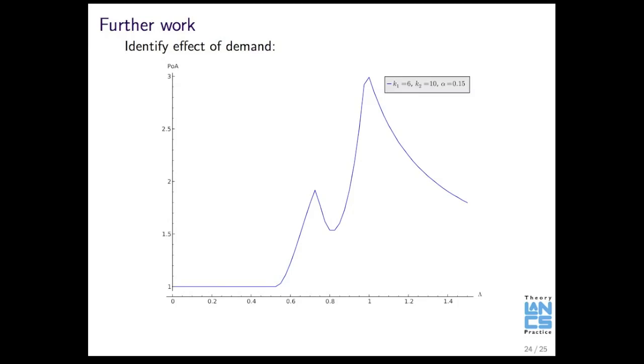Ongoing, I had a few of these running around today, it takes a while to get some of these graphs obviously. Seeing the effect of demand, so as demand increases, how does the price of anarchy increase? So at the moment I've just got that single unit of demand going through, but now if I say, well, as demand increases, what happens?